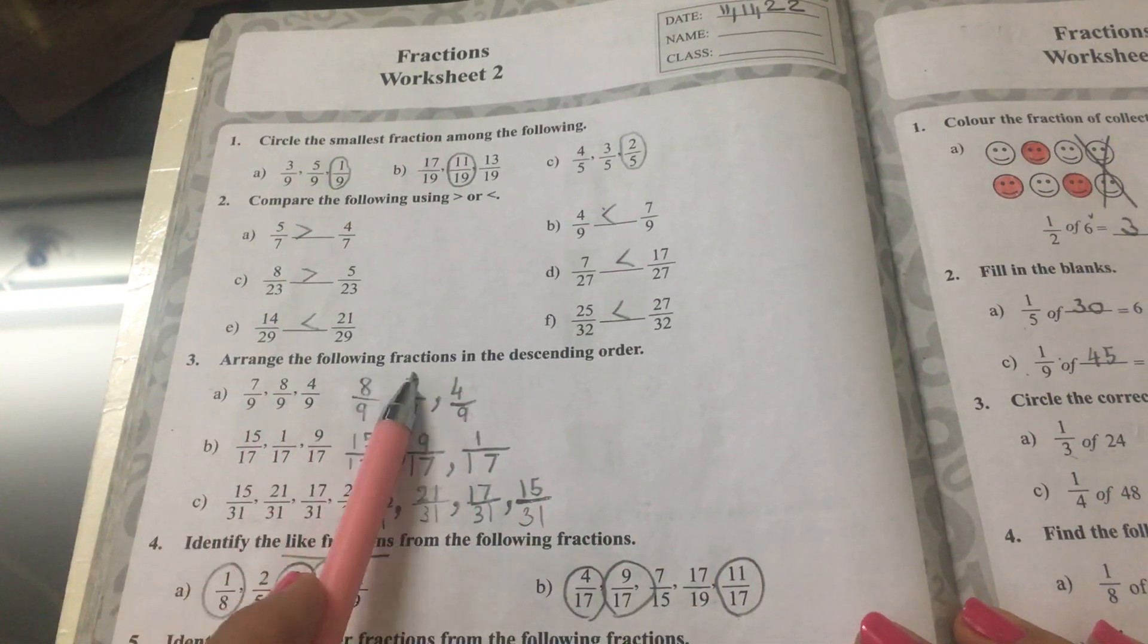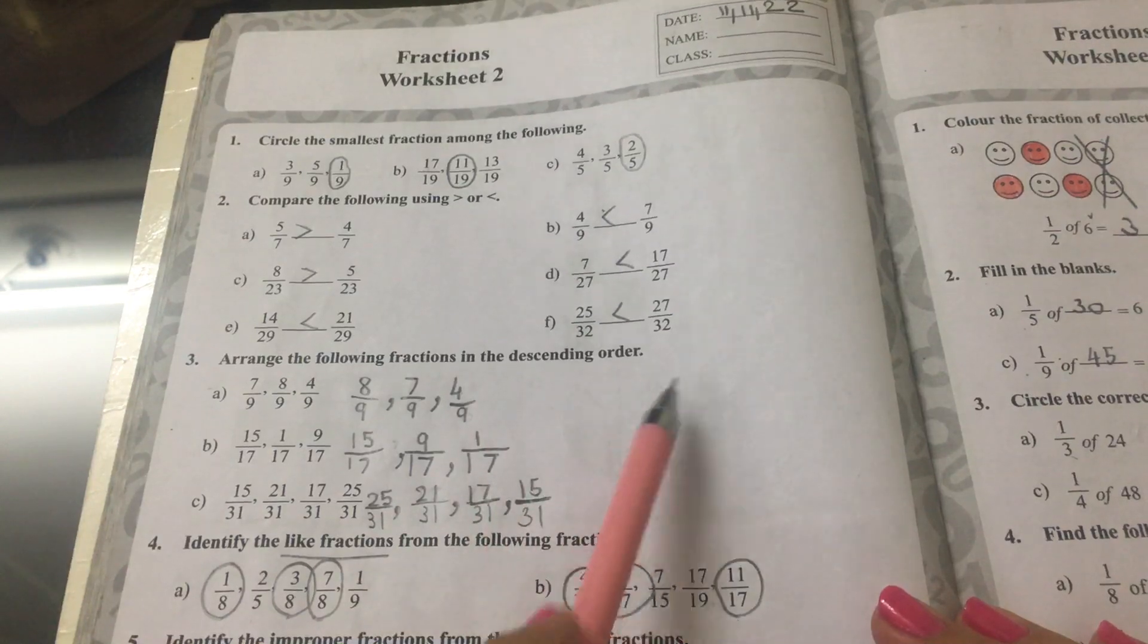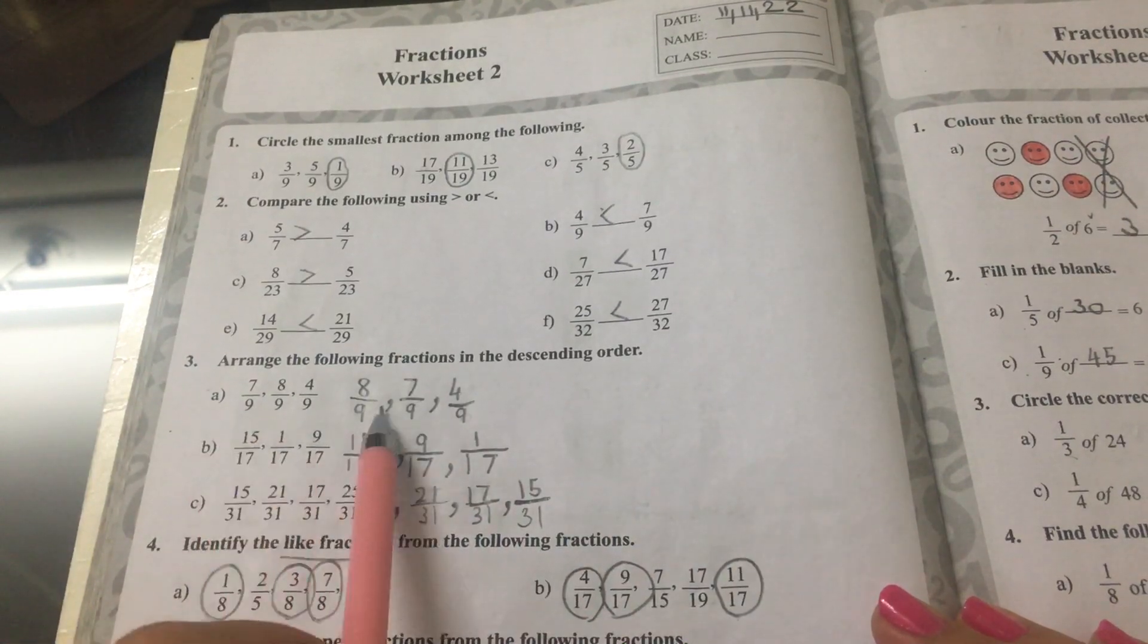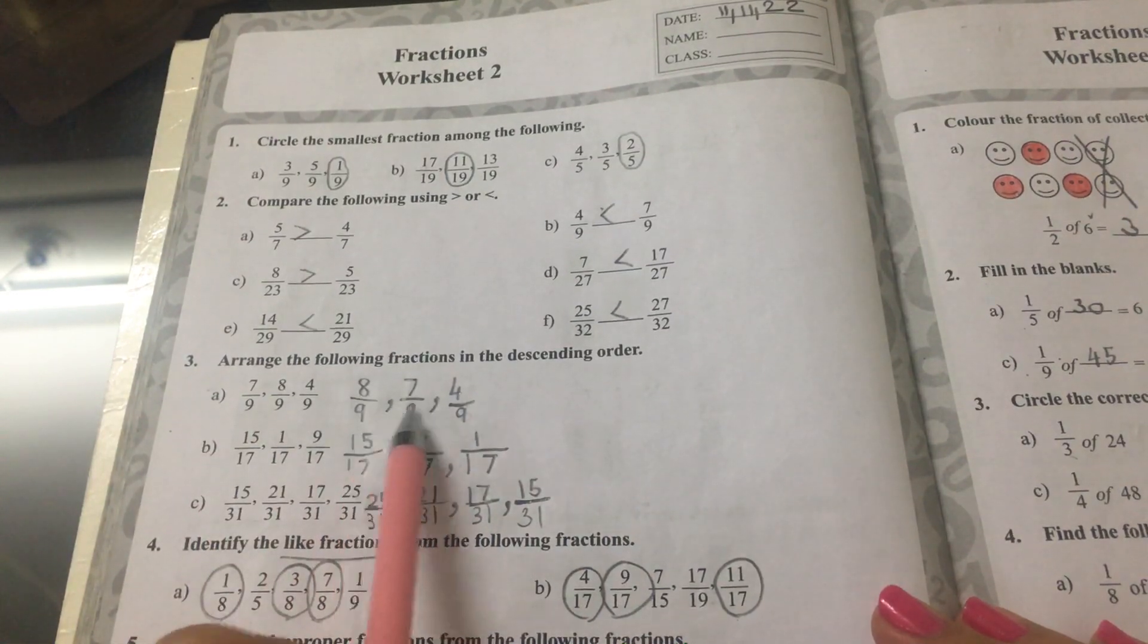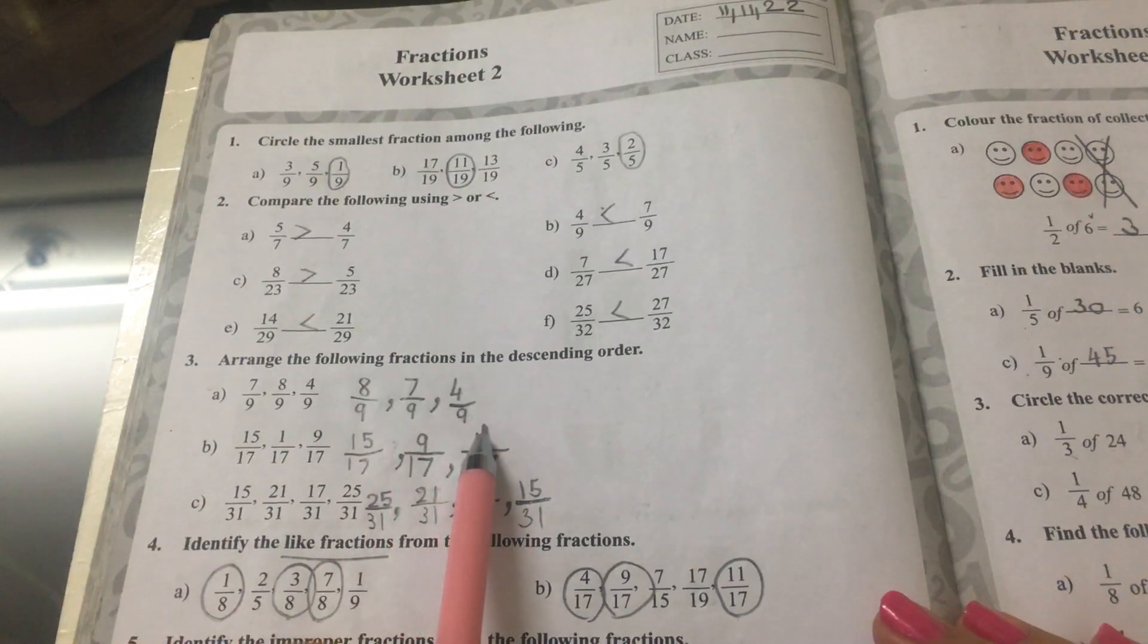Question 3. Arrange the following fractions in the descending order. So A can be arranged as 8 ninths, 7 ninths, 4 ninths.